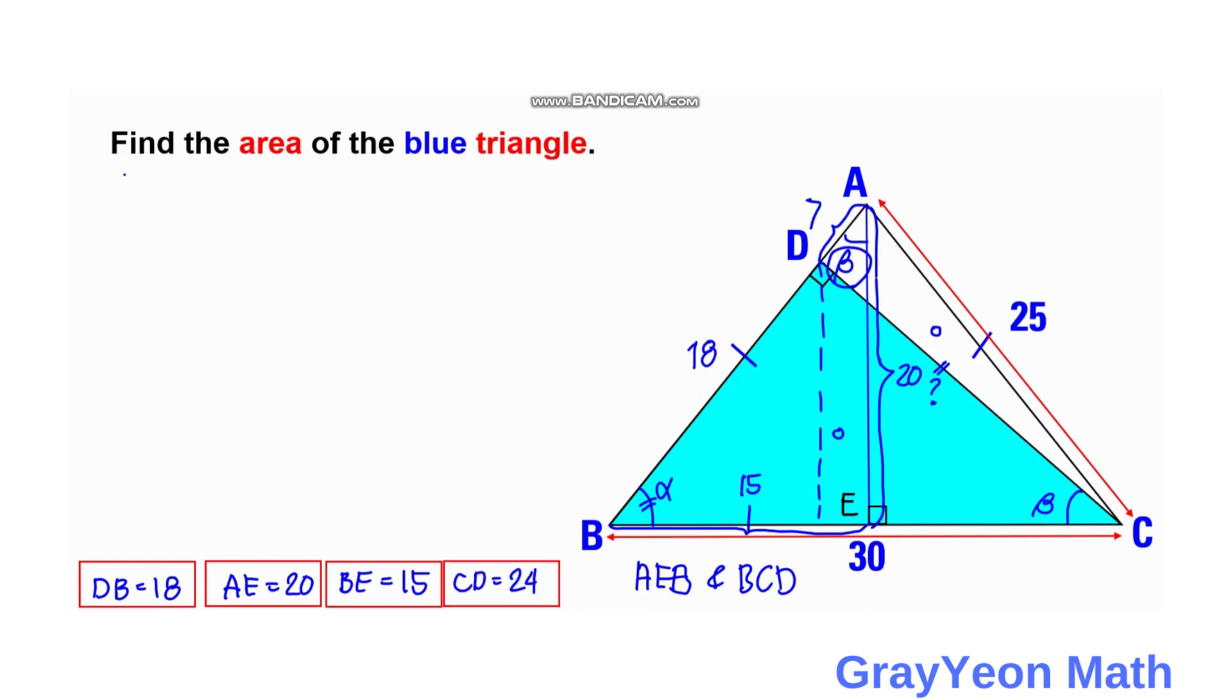Now the area can be easily found out. Area of this BCD equal to one half times this BD and the CD, the two legs, that will be either the base or the height. So one half times BD which is 18 times CD which is 24. So 24 over 2 is 12, so 12 times 18 is 216 square units for the area of BCD, and that is our answer.